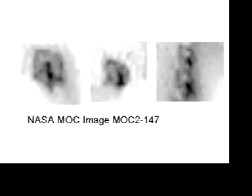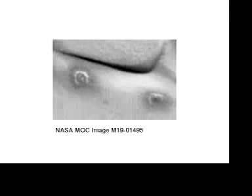MOC-2-147 is a NASA image showing a portion of image SP-2-53807. M-19-01495 recorded September 2000.